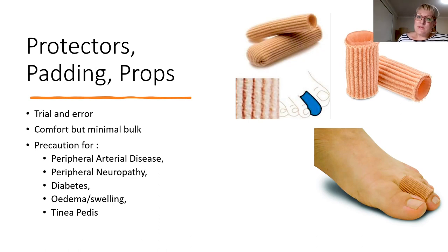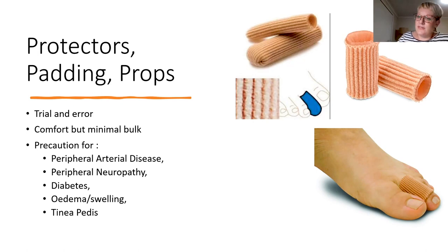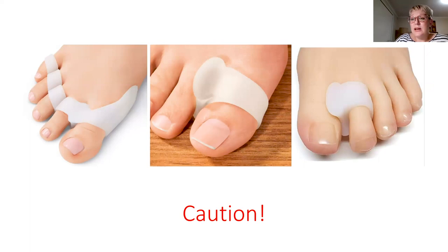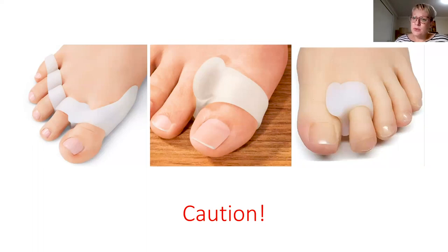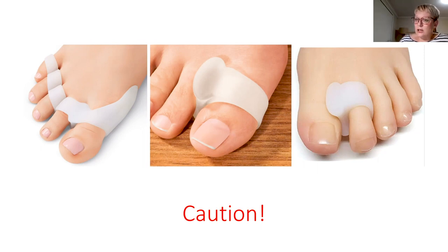An important caution about toe protectors: use caution if you have reduced blood flow to the feet — peripheral arterial disease, peripheral neuropathy, diabetes, edema, or tinea pedis — because some of these devices can act like an elastic band around the toe. The blood vessels and nerves in the toe are microscopic, and with peripheral arterial disease you can actually occlude those vessels and stop blood flowing to the end of the digit. A podiatrist can conduct vascular tests to check adequate blood flow, but a lot of these products can be bought online and it concerns me that people are essentially wearing an elastic band around their toe.